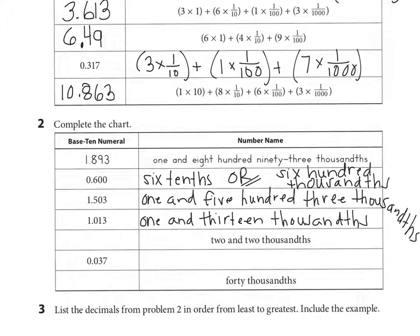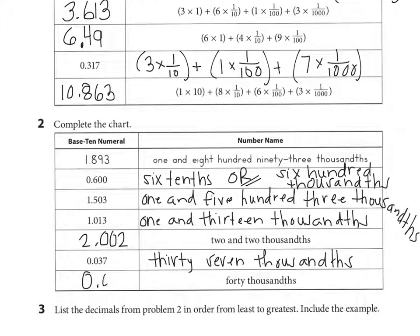And then we're going in the opposite direction next. We have 2 and 2 thousandths. So that's in the thousandths place value, so it needs to look like that. And look at the next one. 37 what? You're right, 37 thousandths. Next we have 40 thousandths. So we're going to write that like this.